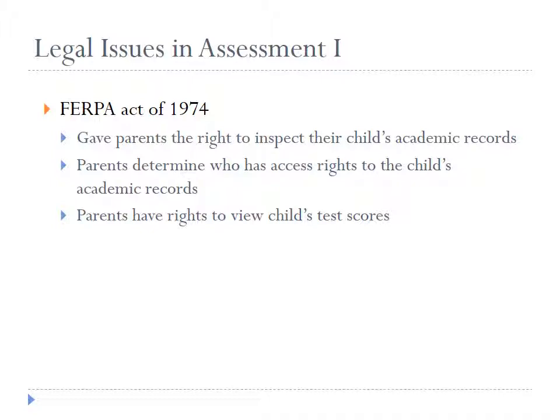As part of their academic record, parents also had the right to view their child's test scores. Furthermore, parents also have the ability to determine who gets access to the records — who can they be shown to or released to?